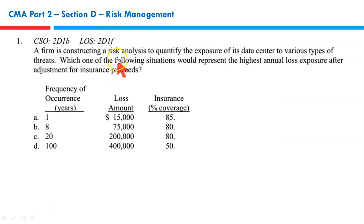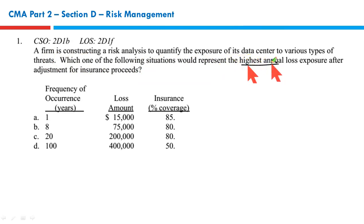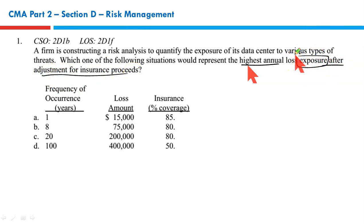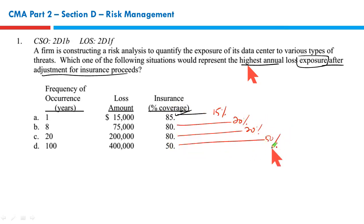Question number 1. A firm is constructing a risk analysis to quantify the exposure of its data centers to various types of threats. Which of the following situations would represent the highest annual loss exposure after adjustments for insurance proceeds? Some of your loss is covered by insurance — 20% exposure, 20% exposure, 50% exposure. We have to compare these four different types of occurrences and the likely exposure in each case.